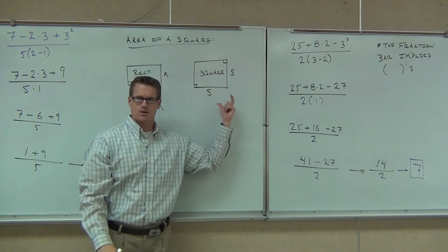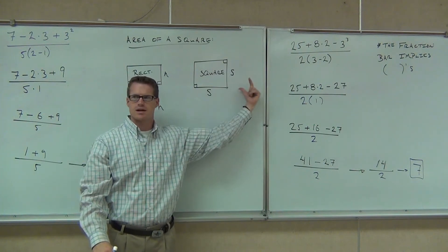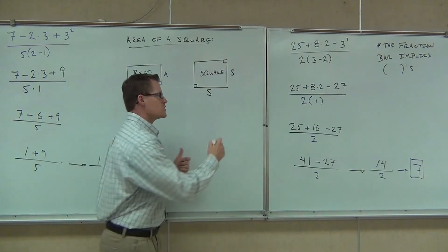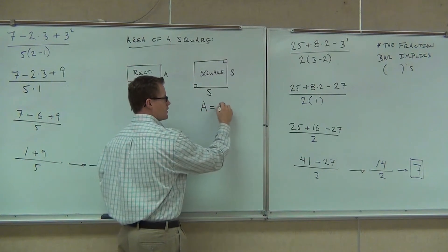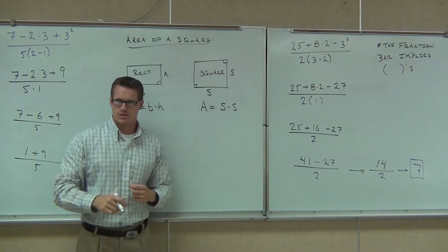So the sides of this rectangle are S and S, side and side. They're the same length. So when we do the area, sure, the area is S times S.